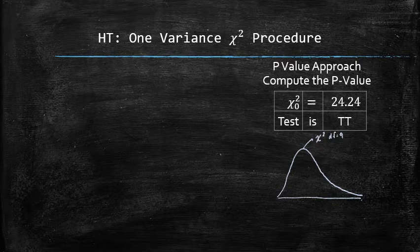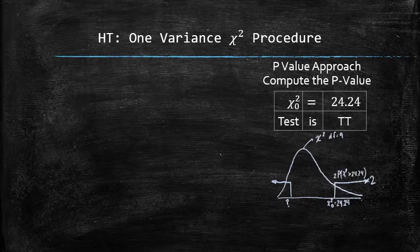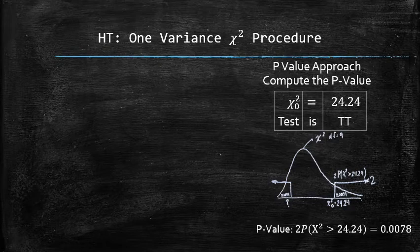So in a two-tailed test, the p-value is the area outside of the test statistic multiplied by 2. Symbolically, it can be expressed as the probability of chi-square greater than 24.24 times 2, which is 2 times 0.0039.